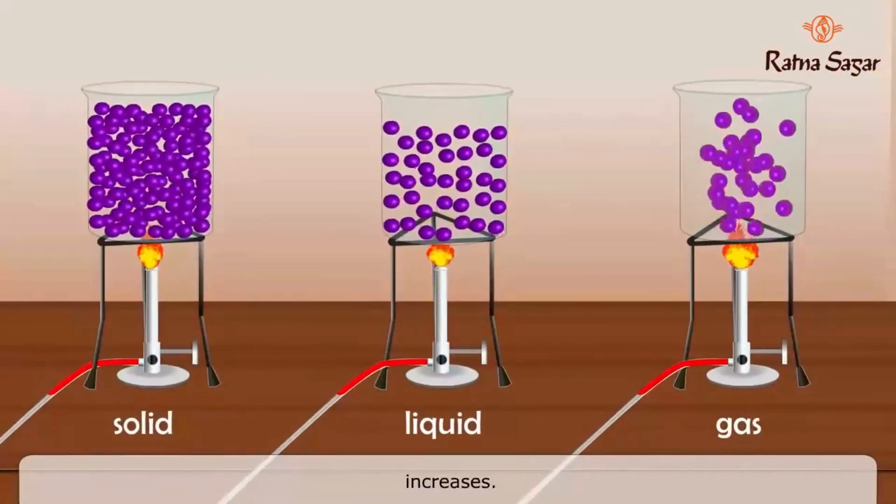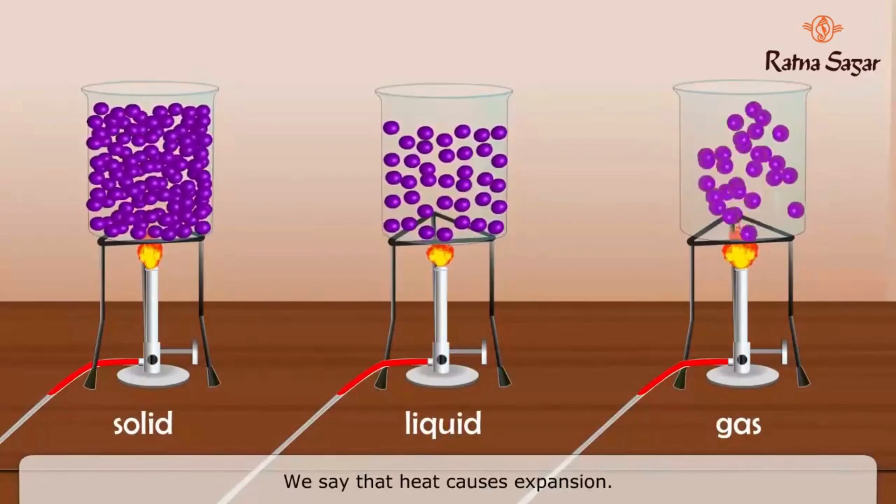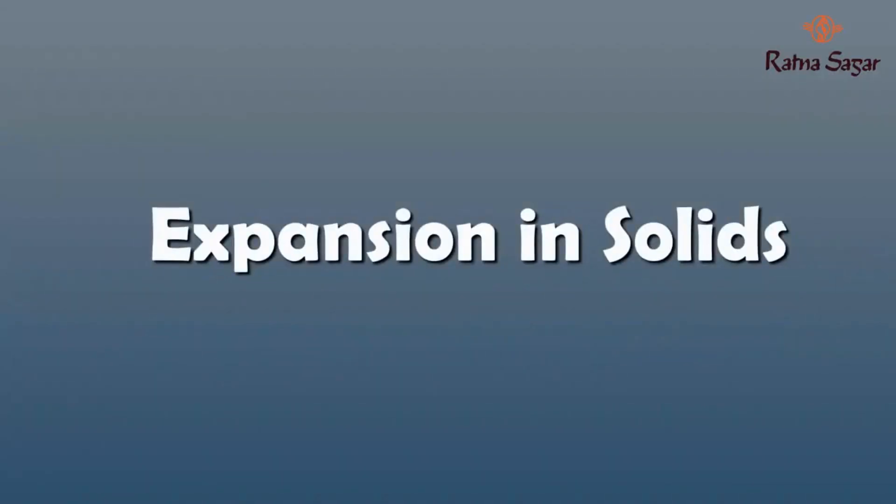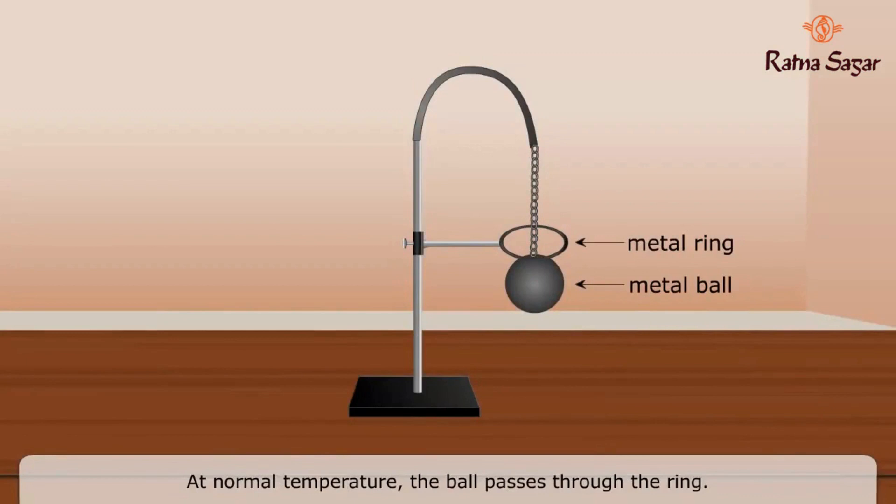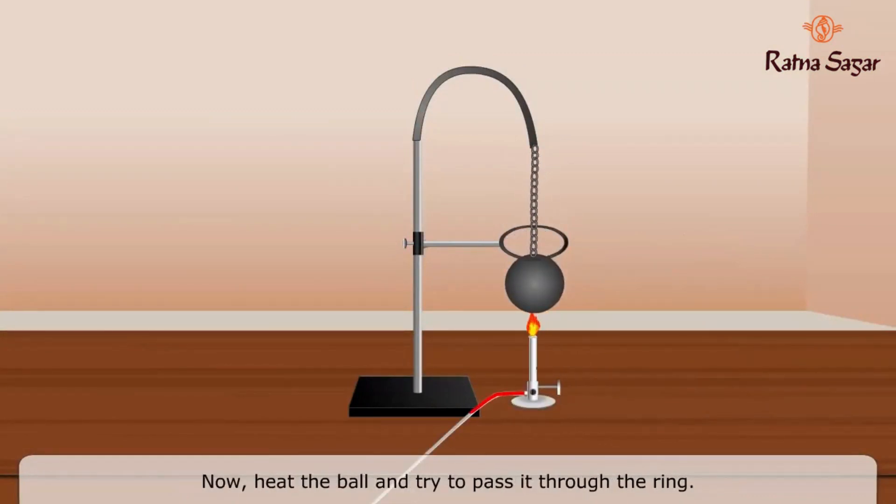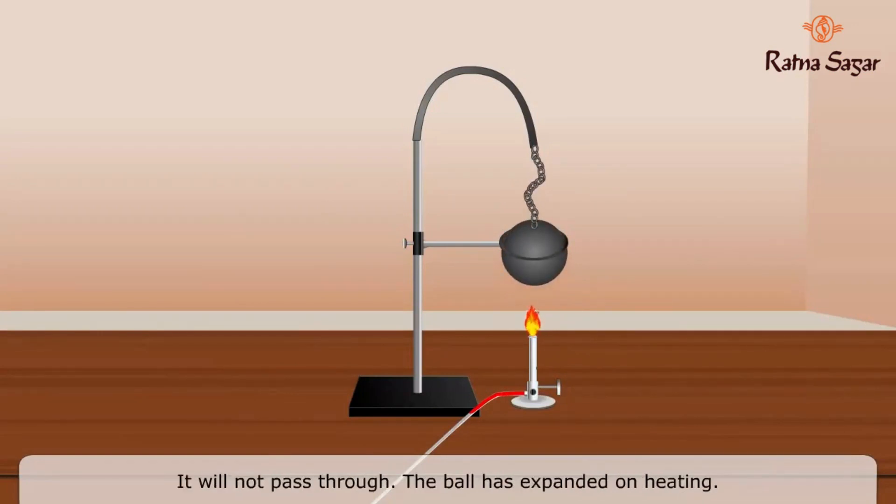Expansion in solids. In a ring and ball apparatus, the apparatus consists of a metal ring and a metal ball. At normal temperature, the ball passes through the ring. Now heat the ball and try to pass it through the ring. It will not pass through. The ball has expanded on heating. Cool the ball to normal temperature. It will pass through the ring again.